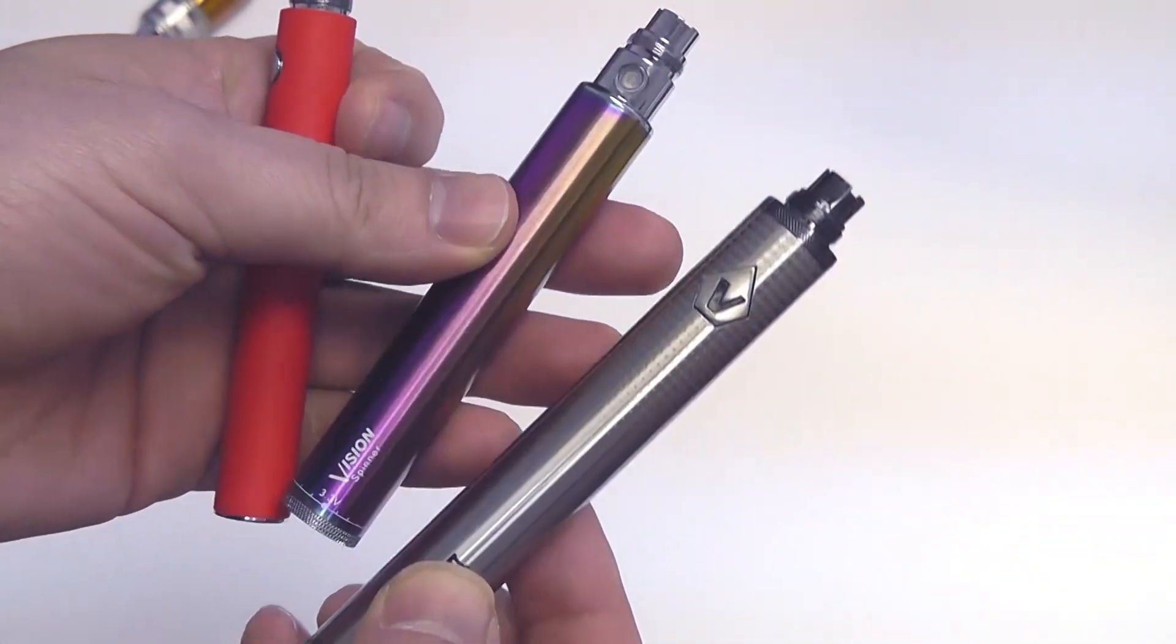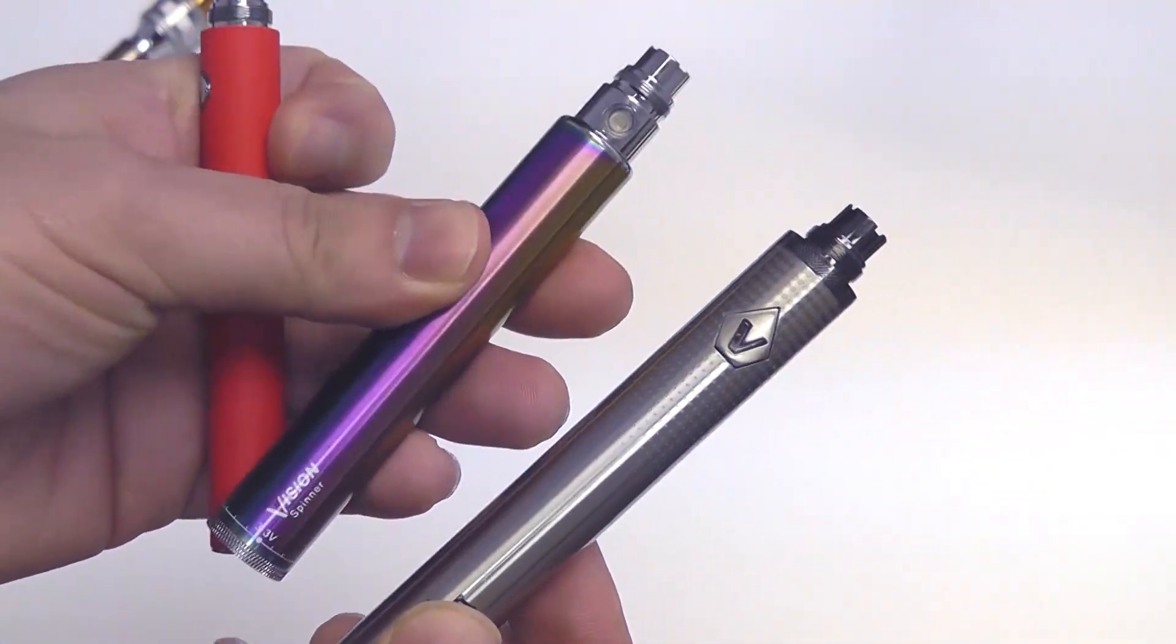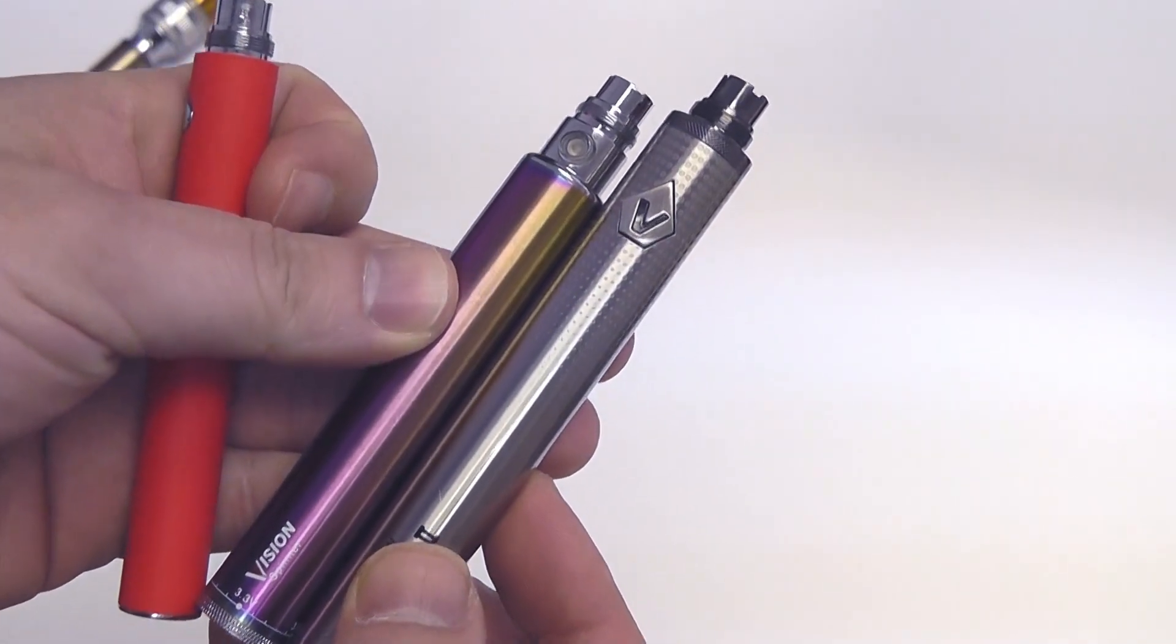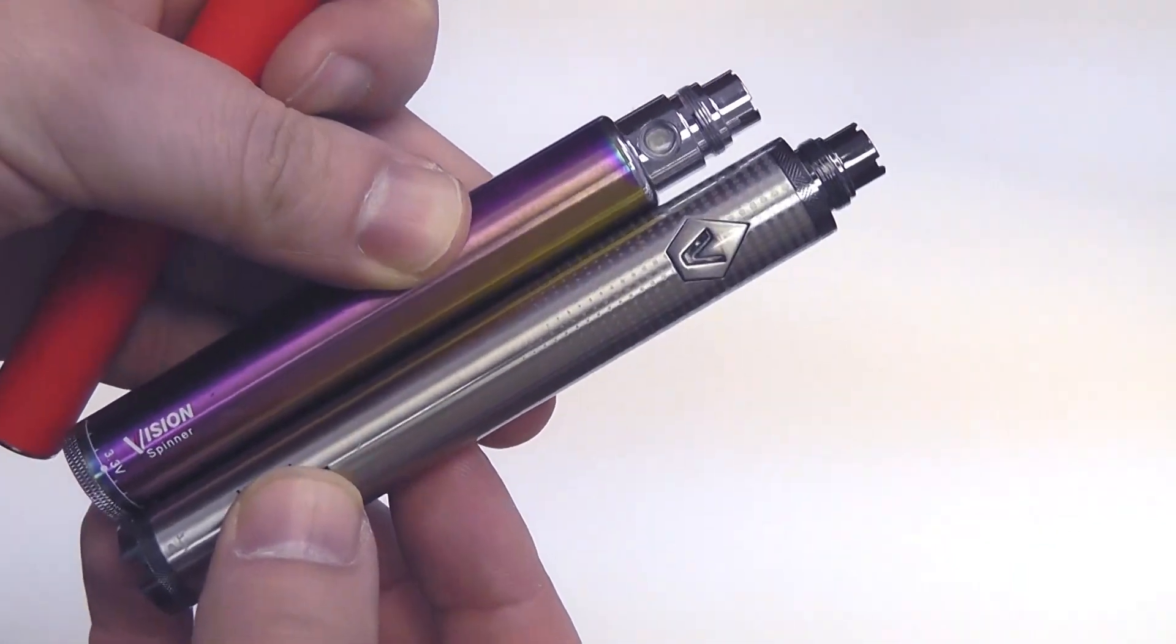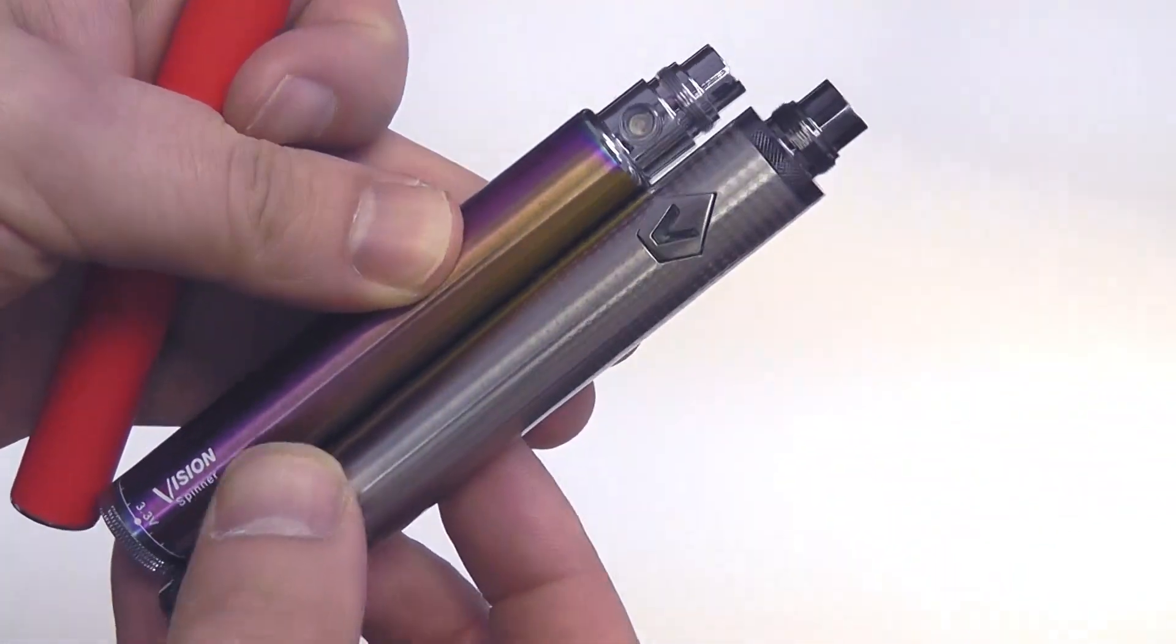This Vision Spinner 1 here is actually a 1300 milliamp. The Vision Spinner 2 is a 1600 milliamp. So it is a bigger capacity battery and it shows in the size.